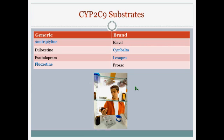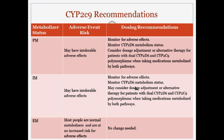For CYP2C9 substrates, most of the 2C9 pathways we discussed are not a major pathway, so this is one where we're concerned about the minor pathway, especially if there is also an issue with the major pathway. All of these are in the top 200. A poor metabolizer may have intolerable adverse effects, so we would recommend monitoring for adverse effects and monitoring 2D6 status. The physician might consider dosage adjustment or alternative therapy for patients with dual 2D6 and 2C9 polymorphisms when taking medications metabolized by both pathways.